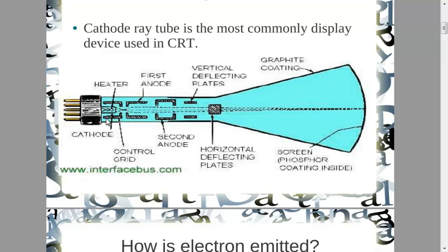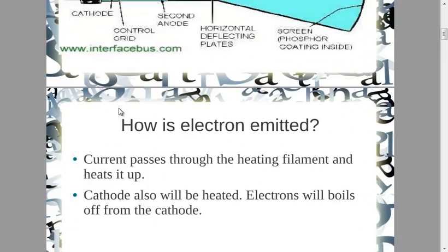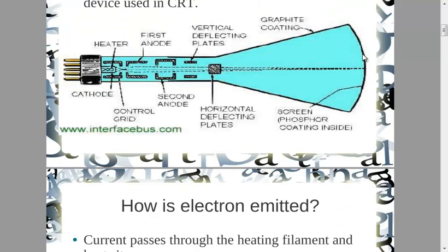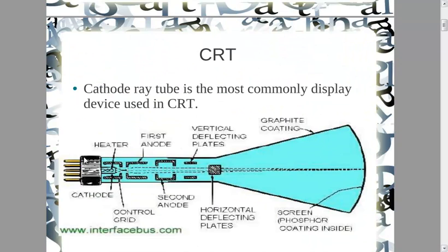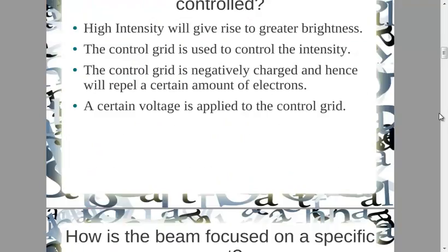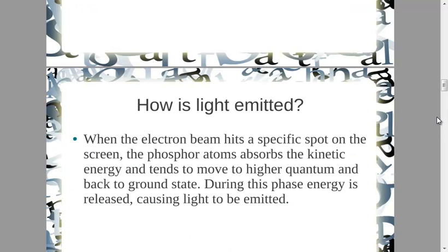How does the control grid do this? The control grid carries the same charge as the electron — they are both negative. From the concept of physics, when two like charges are together they repel each other. When electrons are repelled, some are kept back and won't be going on. The control grid repels a certain amount of electrons, and intensity is controlled by how many electron beams are hitting the screen. A high intensity will give rise to better brightness, since more electron energy hitting the screen produces brightness.